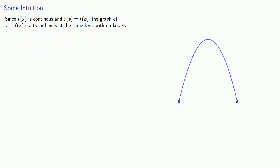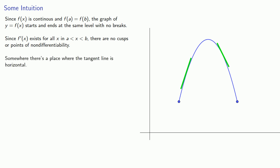And since f prime of x exists for all x in the interval, there are no cusps or points of non-differentiability. We always have a tangent line. And since Rolle's theorem claims that there is some place where f prime of c is equal to 0, this says that somewhere there's a place where the tangent line is horizontal.